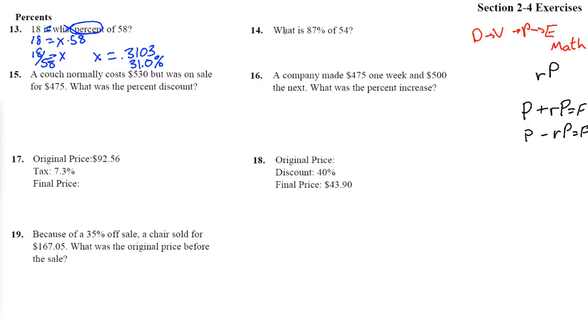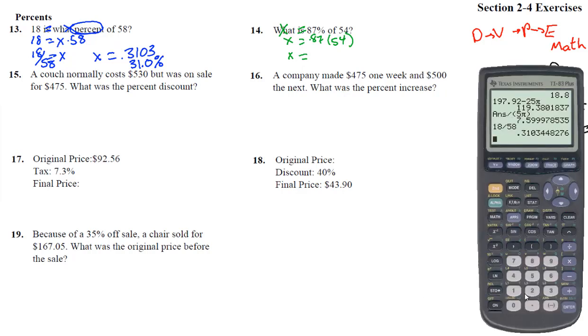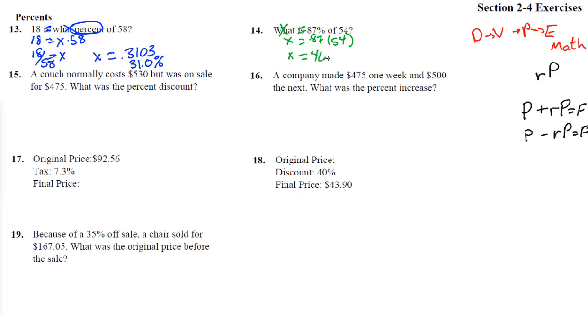Okay, number 14. What is 87%, that's 0.87, of 54? And notice we're doing this thing right here, we're taking that rate times the 58. Here we didn't know what the percent was, but we still did that. So x equals 0.87 times 54, we don't even need to solve for it, so x is just going to equal this number. Let's pull that guy out, 0.87 times 54, and we get 46.98. Could do 47, I guess, if we wanted to, but 46.98 is sufficient.